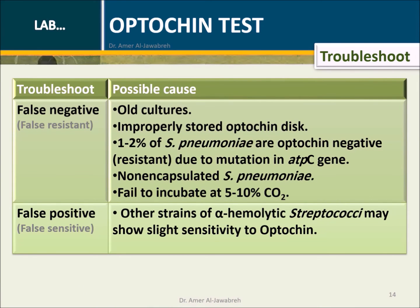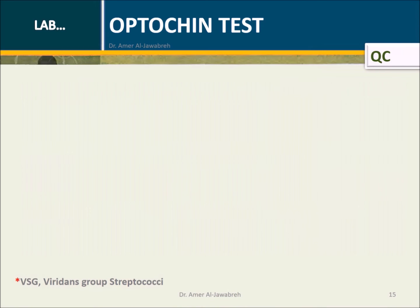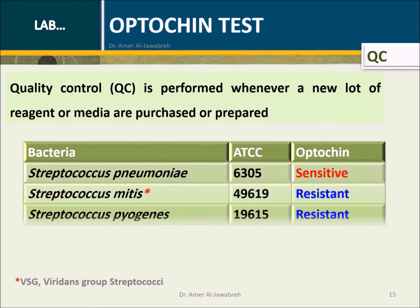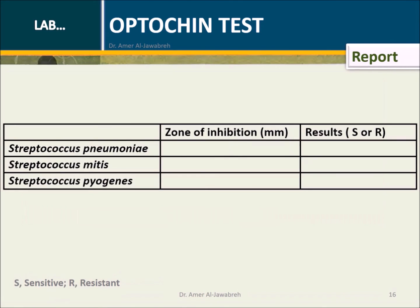A table showing troubleshoots and their possible causes is provided. Quality control is performed whenever a new lot of reagents or media are purchased or prepared. Listed below are ATCC bacteria and their expected results. Report results using the provided table.